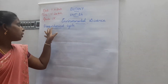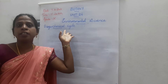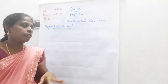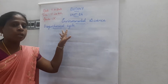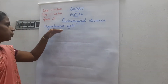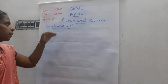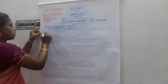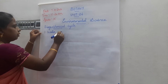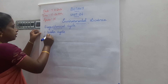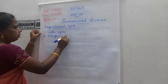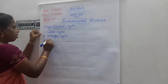What is a biogeochemical cycle? The cyclic flow of nutrients between the living and non-living organisms is called a biogeochemical cycle. Under that biogeochemical cycle, it can be classified into three types: water cycle, nitrogen cycle, and carbon cycle.